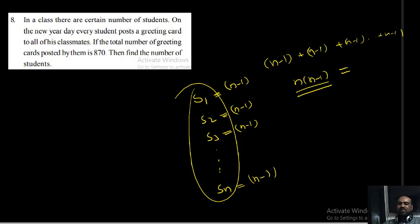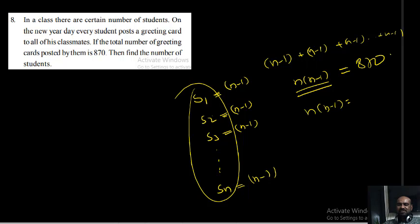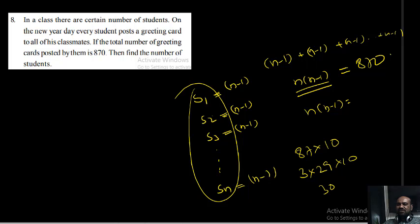That's why the total summation is N into N minus one. So N into N minus one equals total number of greeting cards, which is equal to 870. So N into N minus one equals 870. Now I want to factorize that — I don't want to use a quadratic — so 870 equals 30 into 29, therefore N equals 30. There are 30 students in the class.